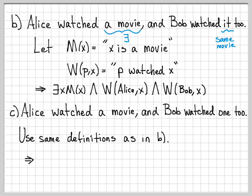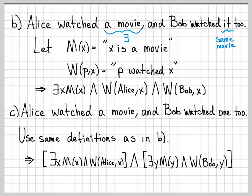So that must mean there exists some X, which is a movie, that Alice watched, and there exists some Y, which is a movie, that Bob watched. So the difference here is that Bob watched a movie, but it's not necessarily the same movie that Alice watched. So there could be an X, which is a movie, and a Y, which is a movie, and X is not necessarily equal to Y.